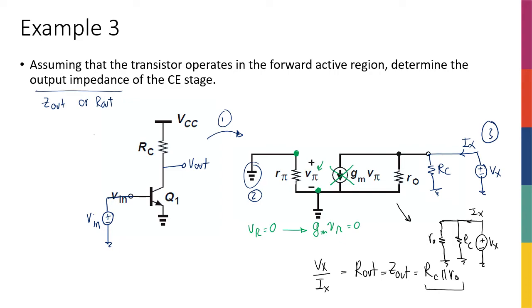If you want to picture it even without the small signal — just on the original circuit — imagine R0 is a resistance between collector and emitter. Looking into the collector node, you have two parallel paths: the path toward Vcc through RC, and the path toward ground through R0. Vcc is a small signal ground, so both resistors are connected on one end to this node and the other end to ground — they're in parallel. So you see R0 in parallel with RC.